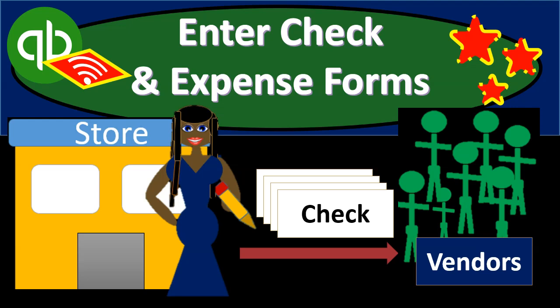In this presentation we will enter check and expense forms. We're going to go through the month-end information — checks and expenses we would have — typical expenses such as the utility bill, the phone bill, and so on. We'll think about how to enter that into the system either as checks or expense type forms, whether we actually write the check or have some kind of electronic transfer out of our bank account, and how we would record that information into QuickBooks Online.